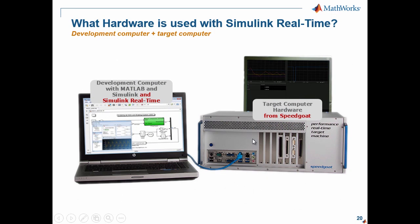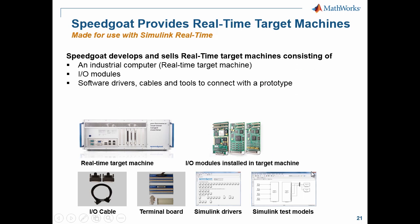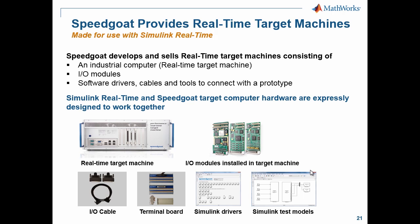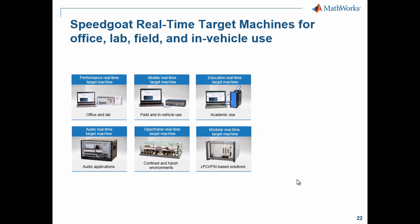Speedgoat develops and sells real-time target machines specifically for Simulink Real-Time — that's all they do. These machines are optimized and tested for Simulink Real-Time and made to work together. The machine is populated with IO cards to meet your requirements — not a standard machine with stuff you don't need. It comes with all necessary cables, terminal boards, drivers, and test models so you can get started quickly.